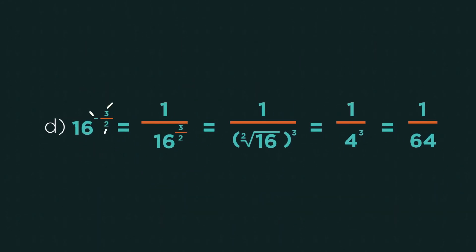On that last one, we need to combine negative and fractional indices. I always do the negative first, then the root, then the power. But again, you can actually do it in any order.